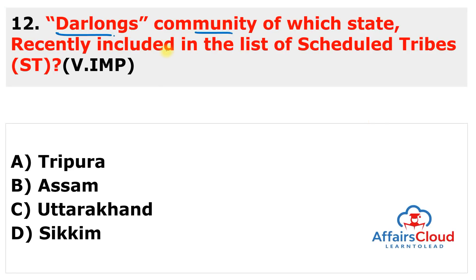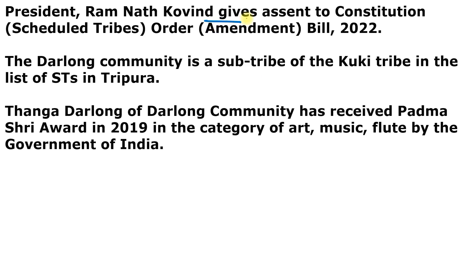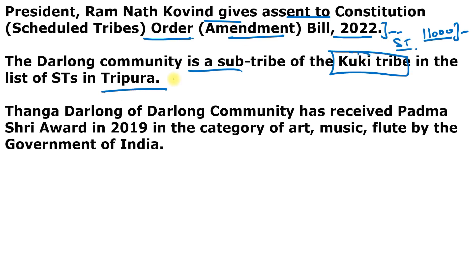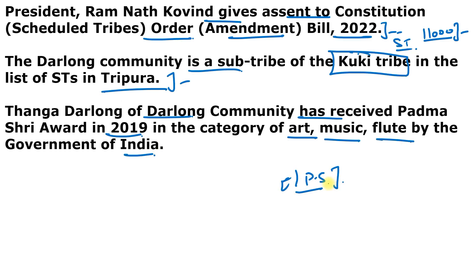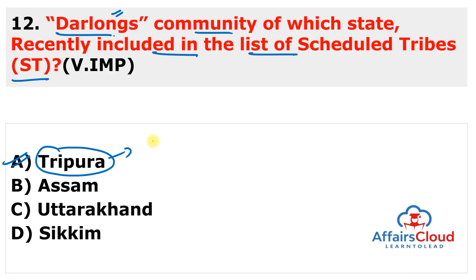Next question: the Darlong community of which state was recently included in the list of Scheduled Tribes? The answer is Tripura, option A. President Ram Nath Kovind gave assent to the Constitution (Scheduled Tribes) Order Amendment Bill 2022. The act provides the Darlong community, a small community of around 11,000 people in Tripura, official inclusion in the Scheduled Tribes list. The Darlong community is a sub-tribe of the Kuki tribe. Thanga Darlong of the Darlong community received the Padma Shri Award in 2019 in the category of art and music (flute). Tripura's Chief Minister is Biplab Kumar Deb and Governor is Satyadeo Narayan Arya.